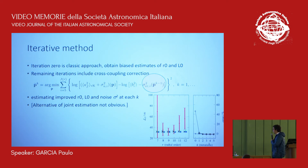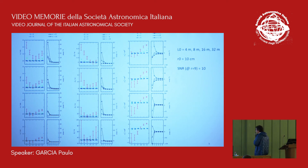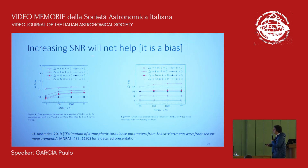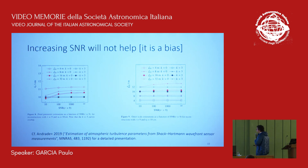Here we show estimates of R0, assumed at 10 centimeters, for different outer scales: 4, 8, 16, and 32 meters. The noise estimate is also converging to the expected value everywhere, very quickly after three iterations. An important and counterintuitive effect is that increasing signal-to-noise does not improve the estimate — it actually introduces more bias. Noise is beneficial in the sense that it reduces the cross-coupling contribution. So if you are dominated by noise, cross-coupling is not important and you are less biased. As signal-to-noise increases, the estimate becomes more and more biased.